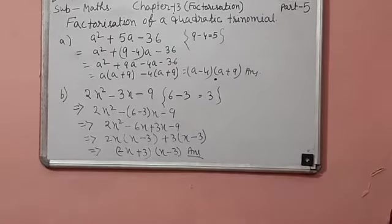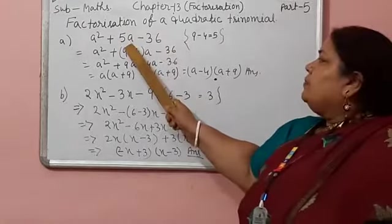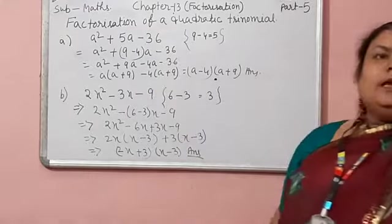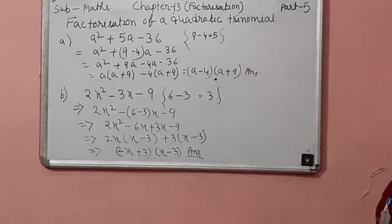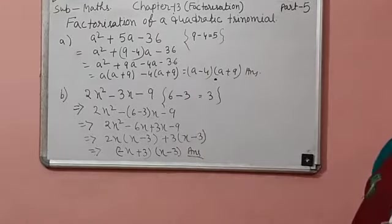Trinomial means this expression has 3 terms. Here a square, 5a and 36 is 3 different terms. And here we factorize by different method.